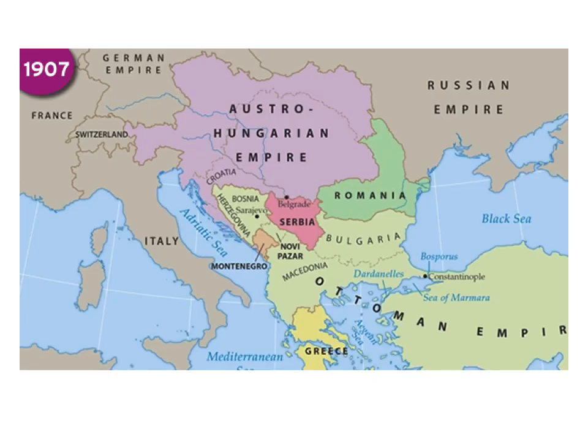Looking at the Balkans, we're down here in southeastern Europe. We've got the Austro-Hungarian Empire in the north, the Russian Empire in the east, and the dying Ottoman Empire in the south. Making a connection to previous material, in 1905 Russia lost a war to the new Japanese Empire, and because of that, other people started to think that Russia was vulnerable and that they could take advantage of Russia's perceived weakness.